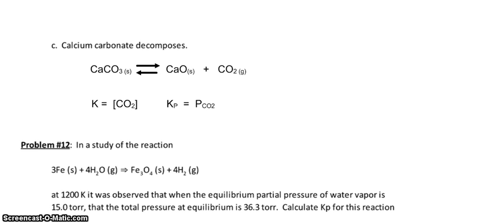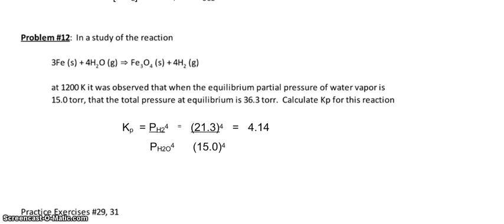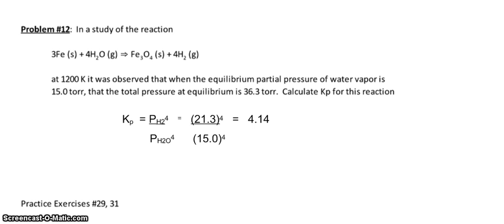Go ahead now and do your problem number 12 where you have iron and gaseous water going on and actually calculate Kp for the reaction. Now read the question very carefully. They did not tell you the pressure of the hydrogen gas, but you can certainly figure it out. So pause your computer, figure it out, and I'll be right back. All right. So notice that this time we have our Kp expression with the pressure of hydrogen gas raised to the fourth over the pressure of water vapor raised to the fourth. That 21.3 came from the fact that the total pressure is 36.3. I subtracted 15 from that because that was your water pressure. And that's where I got the 21.3. So you raise everything to the fourth, you get 4.14.